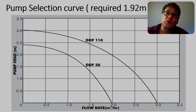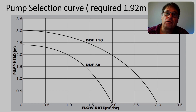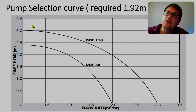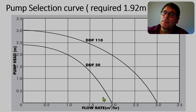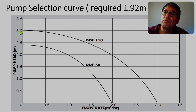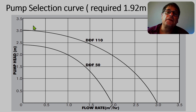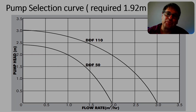Another tip is that pumps are more efficient towards the center of the curve. So in that central area, the pumps will be more efficient than at either end. If your calculated results fall within a less efficient area, it will be better to look for another pump.